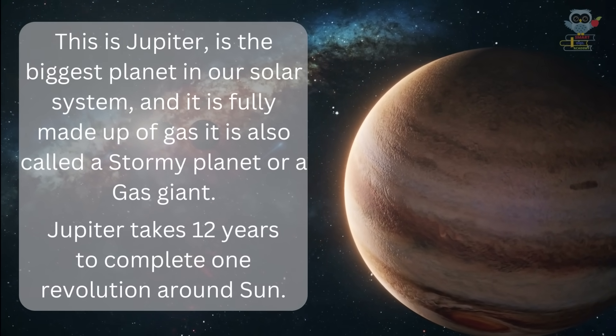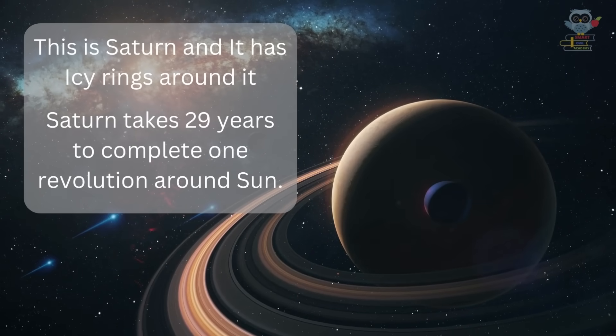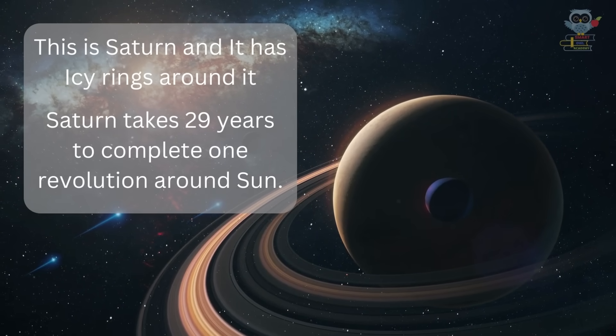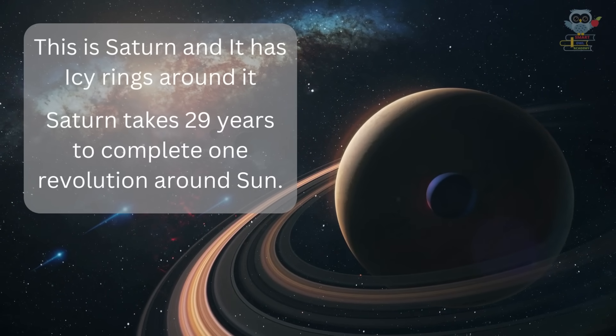This is Saturn, and it has icy rings around it. Saturn takes 29 years to complete one revolution around the Sun.